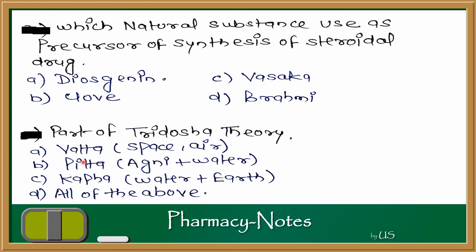Next question: what are the parts of the 3 Dosha theory? The options are Vata, Pitta, Kapha, and D — all of the above. In the Ayurveda system, the body has 3 Doshas made from combinations of the 5 elements: Vata is made with space and air, Pitta is made with Agni and water, and Kapha is made with water and earth. If these 3 are balanced, the body is healthy; if not, the body is in an unhealthy condition. The answer is D — all of the above.